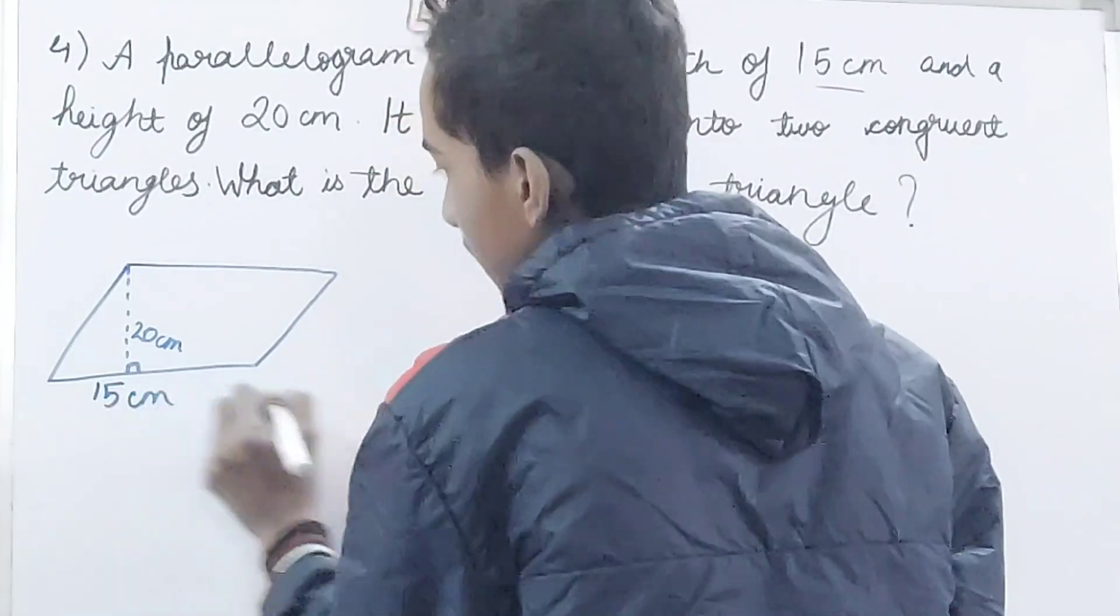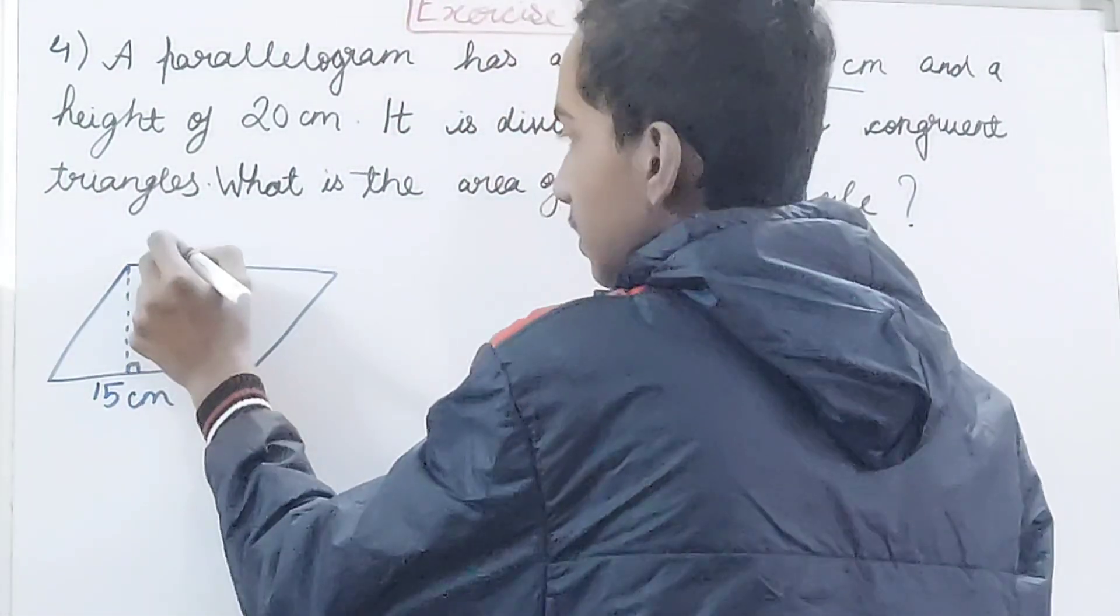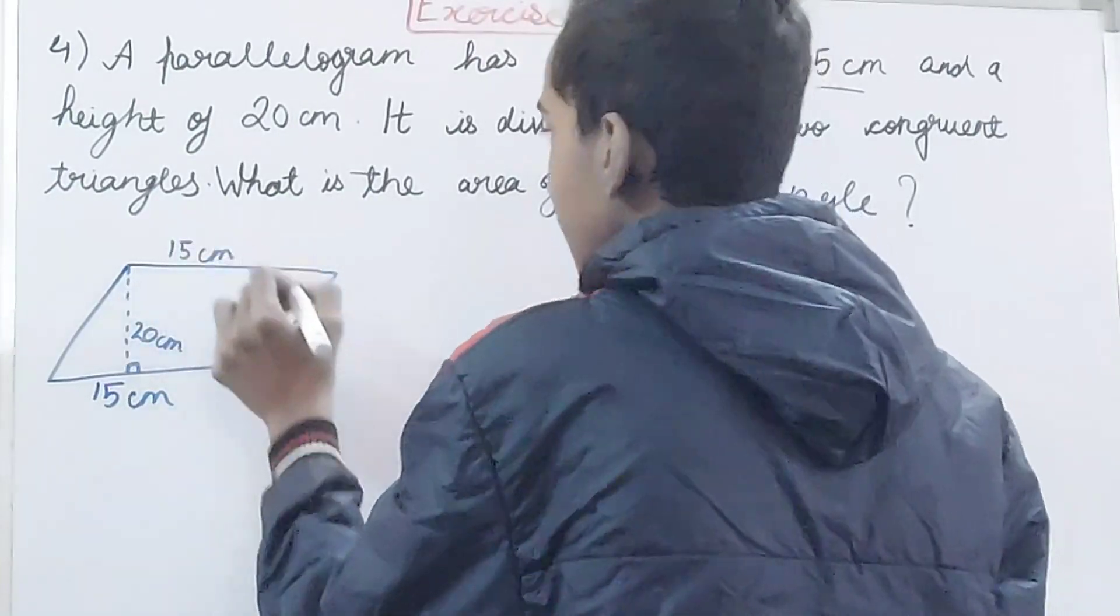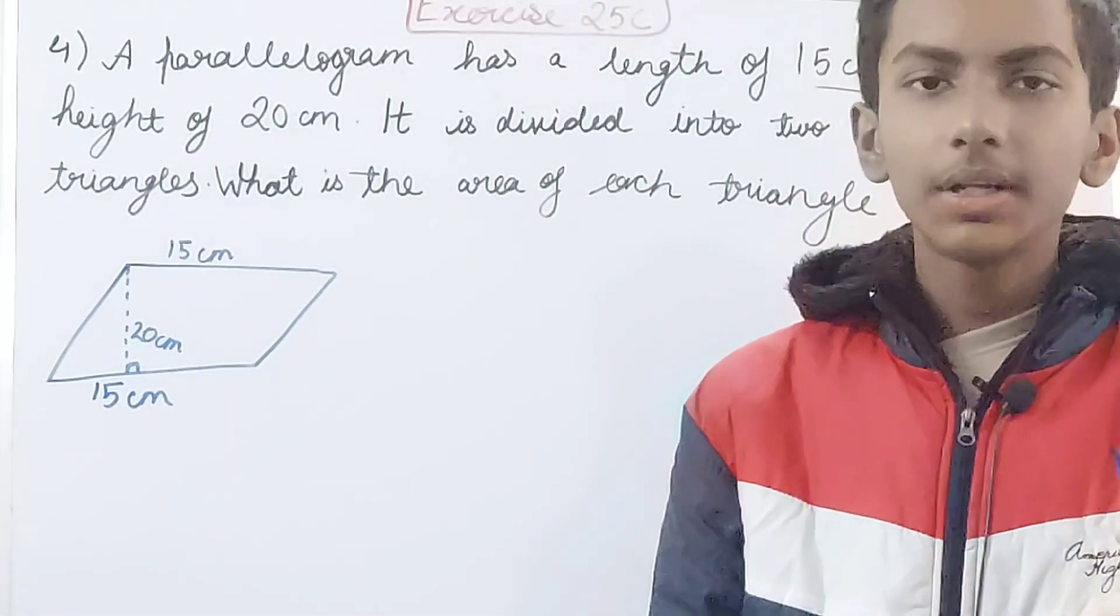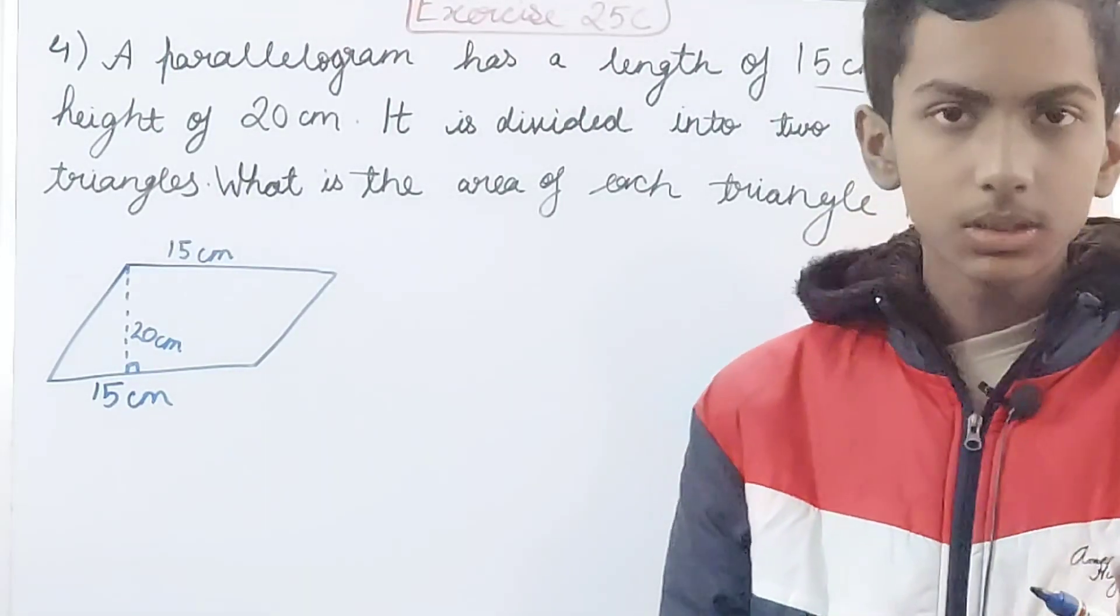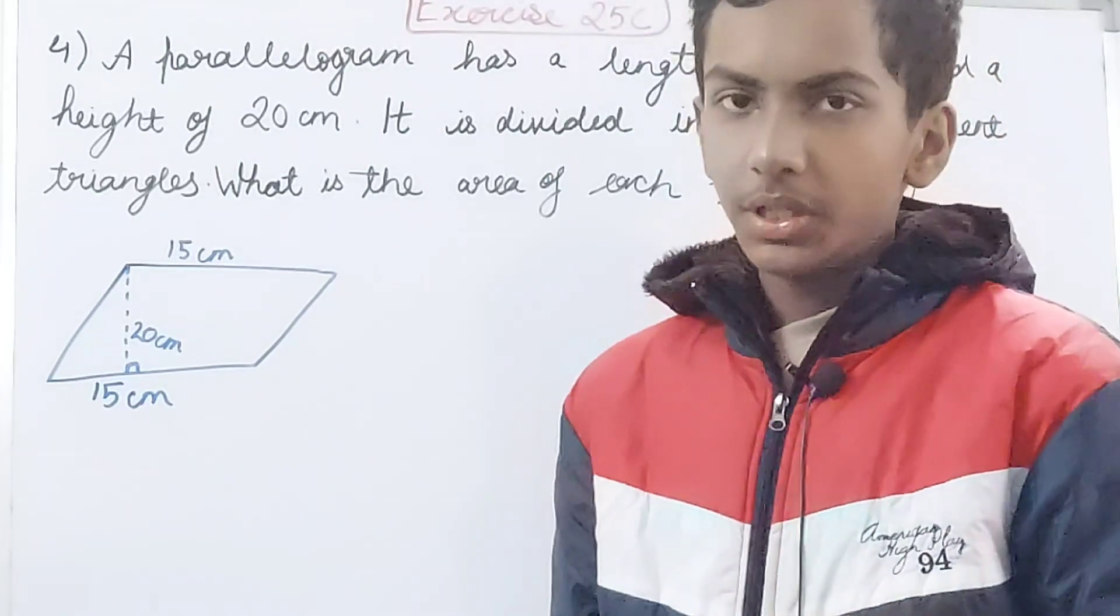And it is a parallelogram so this opposite side will also be 15 centimeters. Now it is saying it is divided into two congruent triangles, so the only way we can divide a parallelogram into triangles is by constructing the diagonals.